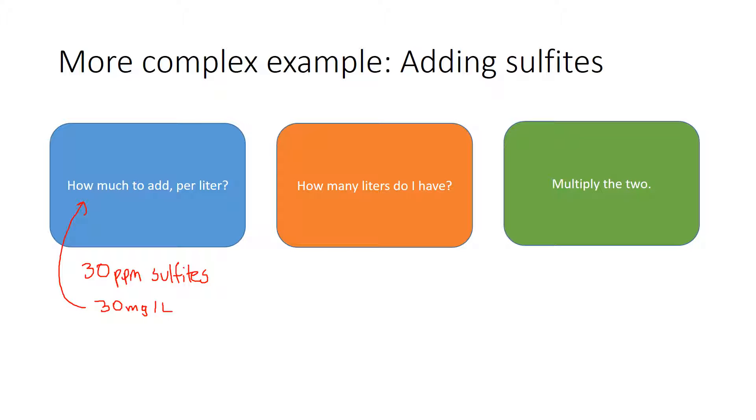And so we're going to add potassium metabisulfite instead of sulfites. So we just need a conversion factor. So let me write this a little differently. Let me write this as 30 milligrams per liter that way.